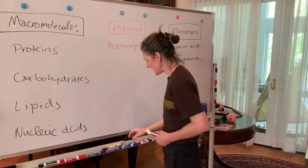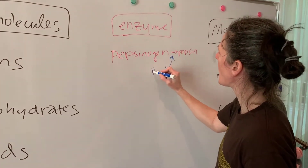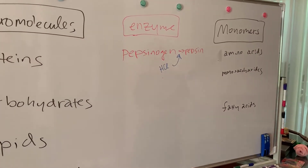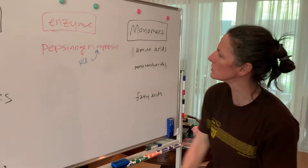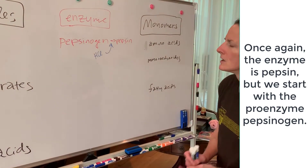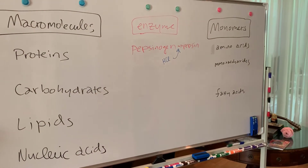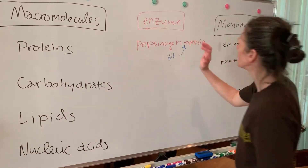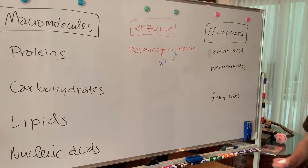To convert pepsinogen to pepsin, we need to lower the pH by adding hydrochloric acid. So we're going to use pepsinogen plus hydrochloric acid. The protein we're going to digest is albumin — the same stuff you find in egg whites. We'll digest albumin with pepsinogen, convert it to pepsin using hydrochloric acid, and we would expect to get amino acids.